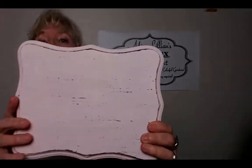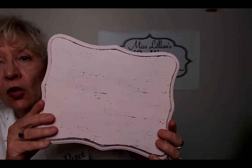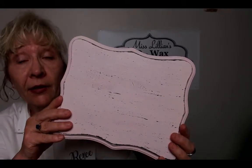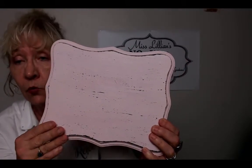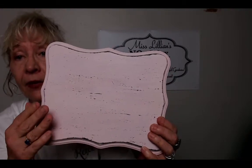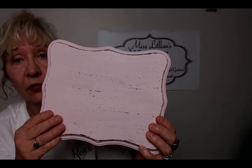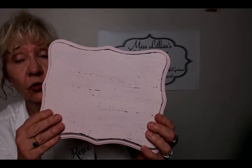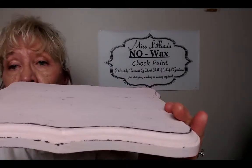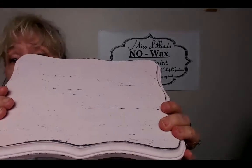Here is a piece that's already been done. The base color was Miss Lillian's no wax chalk paint in the Onyx, and then we applied a layer of the wax bar, and then we came in with Miss Lillian's no wax chalk paint in the Sponge Sugar. I just love the authentic look that you get. You can see around the edges and right in through here, and it is just so easy.